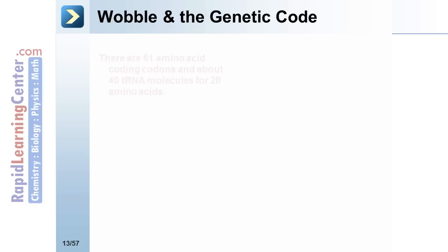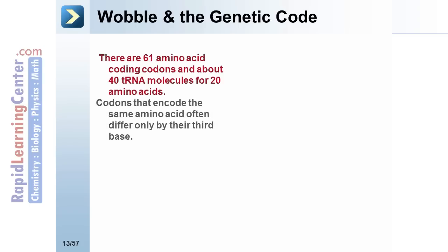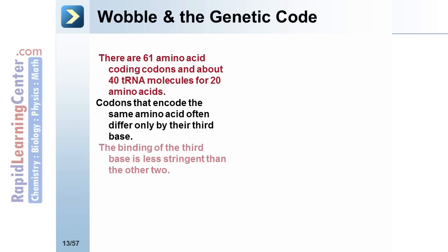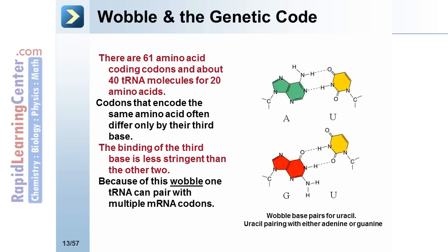Wobble and the genetic code. There are 61 amino acid coding codons and about 40 tRNA molecules for 20 amino acids. Codons that encode the same amino acid often differ only at their third position — that is, at their third base. The binding of the third base is less stringent than at the first two positions. Because of this wobble, one tRNA can pair with multiple mRNAs. Wobble base pairs for uracil include uracil pairing with either adenine or guanine. Wobble is a critical concept to be familiar with.